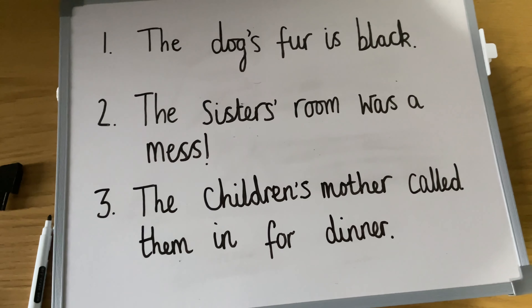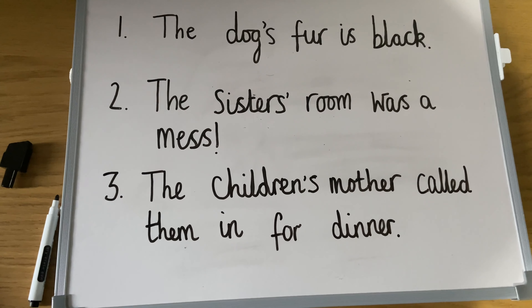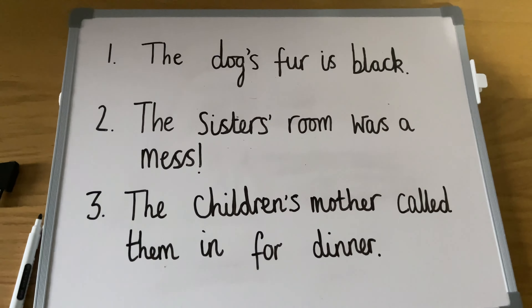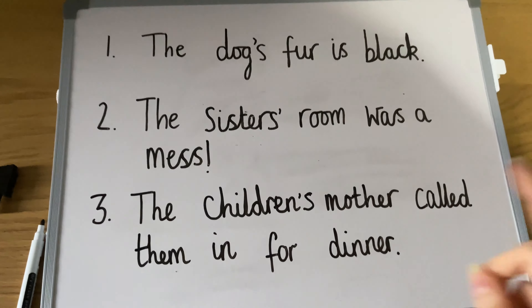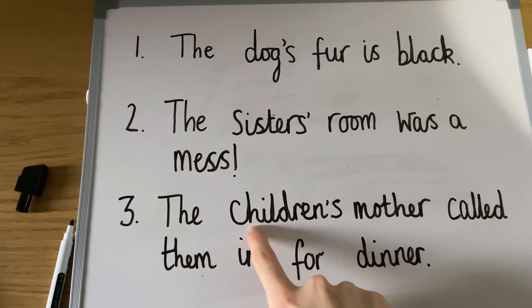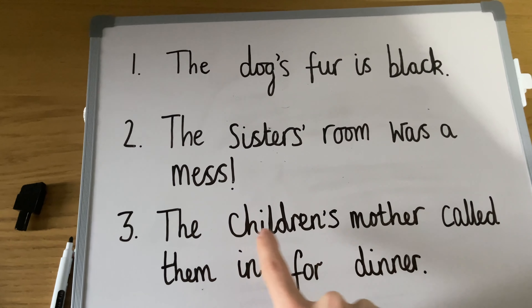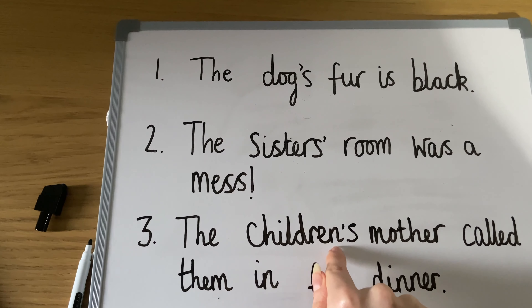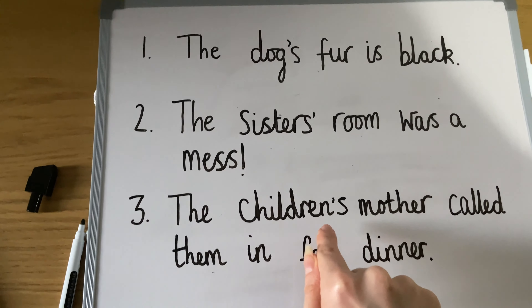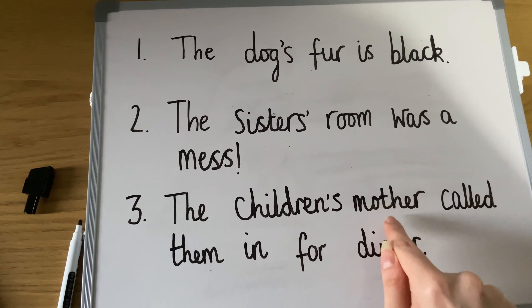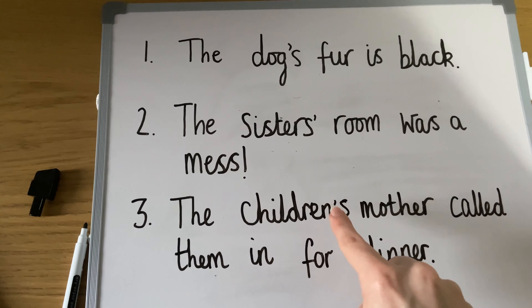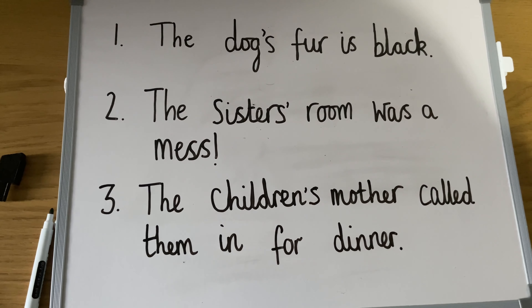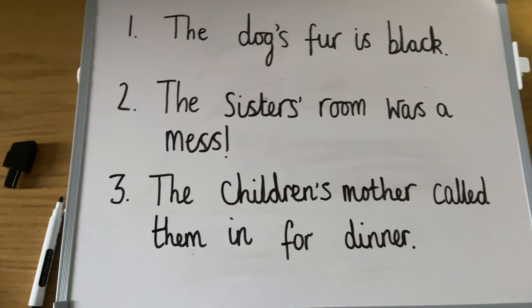Our third example was another plural noun sentence, but a little different because the subject was the word 'children.' This is a plural word, but it doesn't end in an s like 'sisters' did. So what we need to do is add an apostrophe s to show the mother is calling to all her children. So now it successfully reads: the children's mother called them in for dinner.